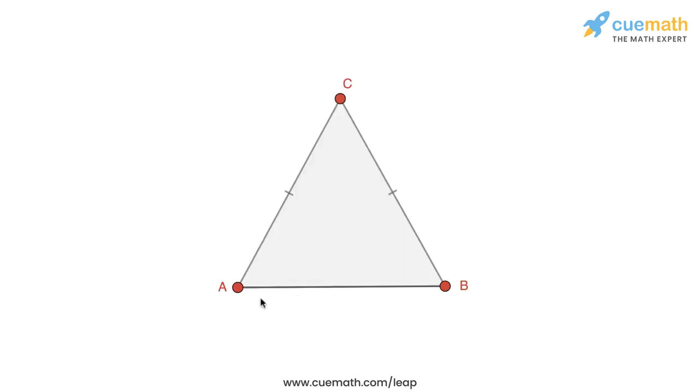In question three of this exercise, the problem statement says verify by drawing a diagram if the median and altitude of an isosceles triangle can be the same. So what I will do is I will first show you a simulation of an isosceles triangle to help you visualize the median and the altitude in an isosceles triangle and how they may be related, and then we will come back and answer this question.